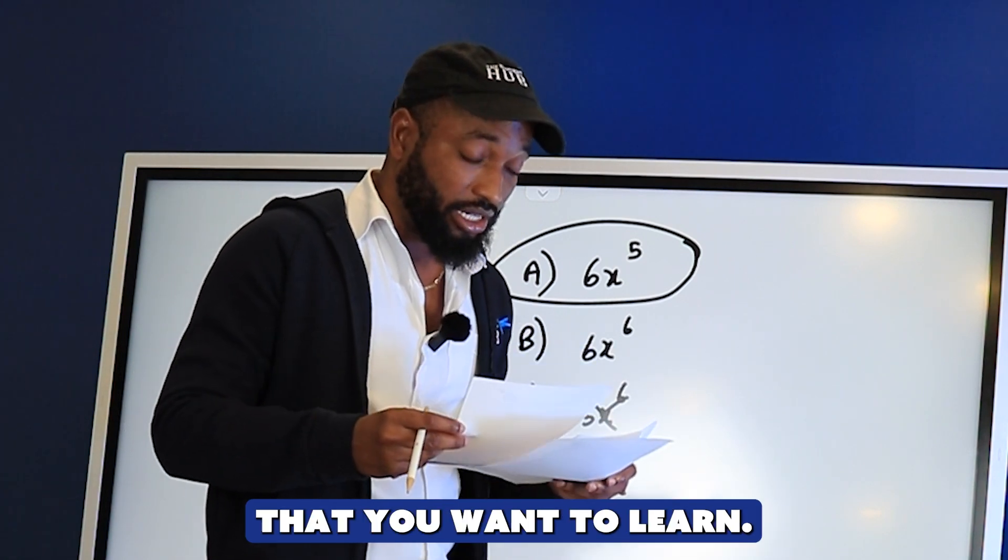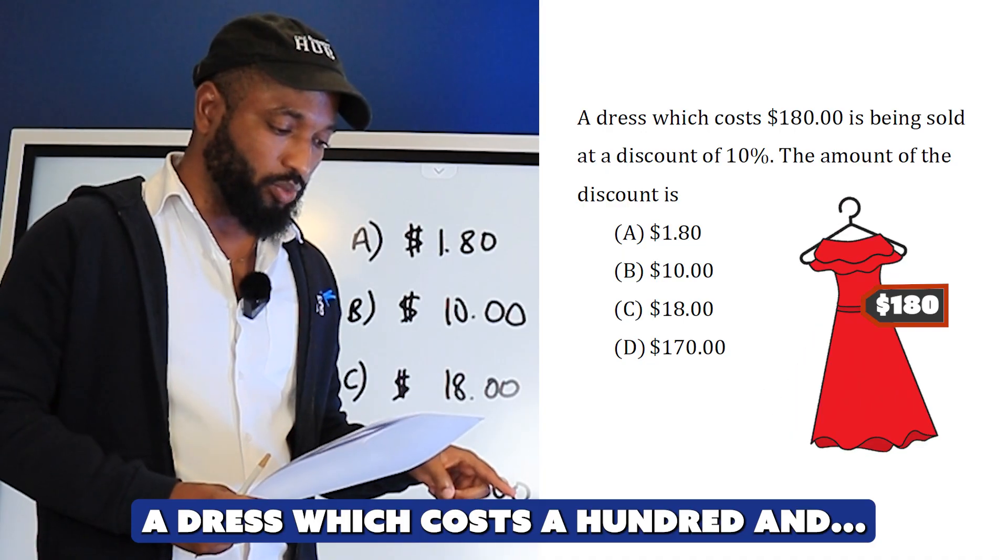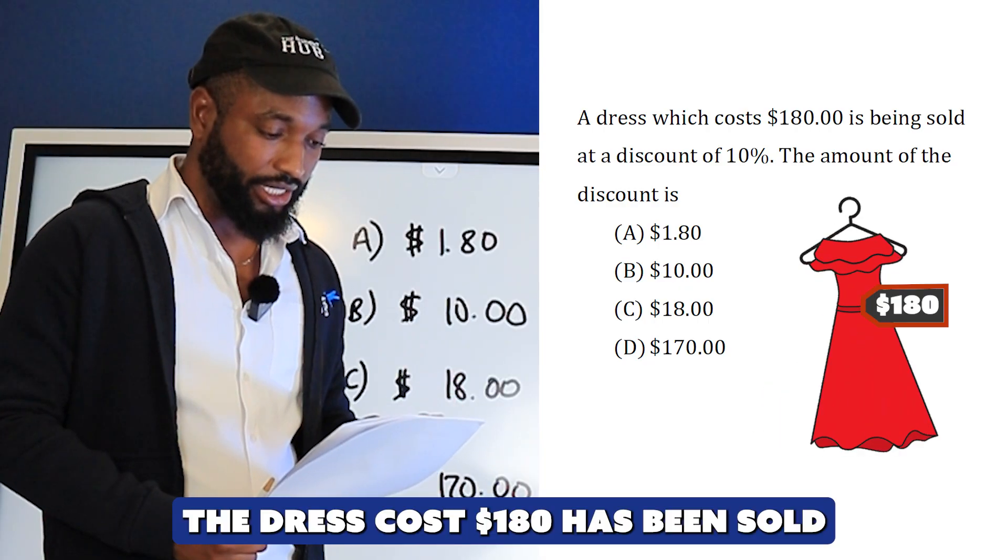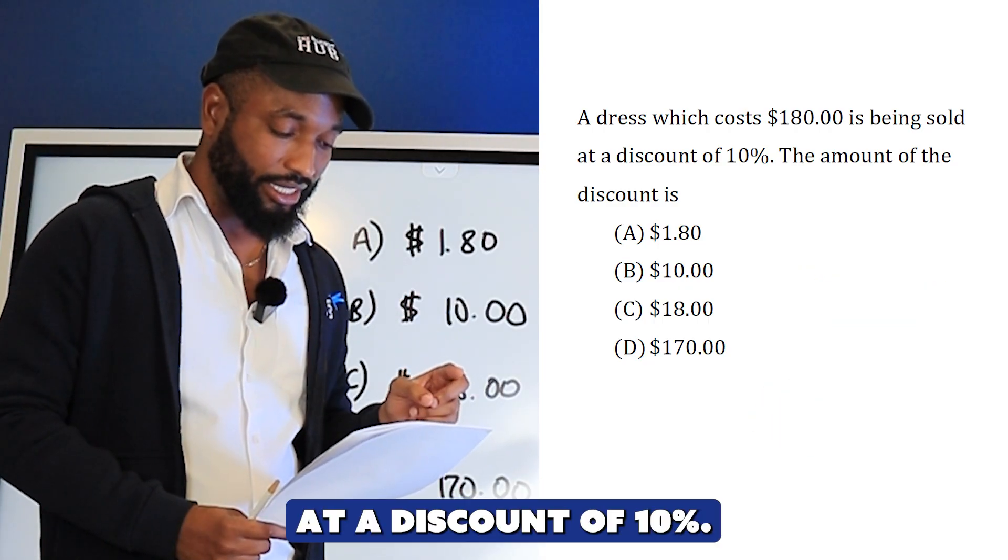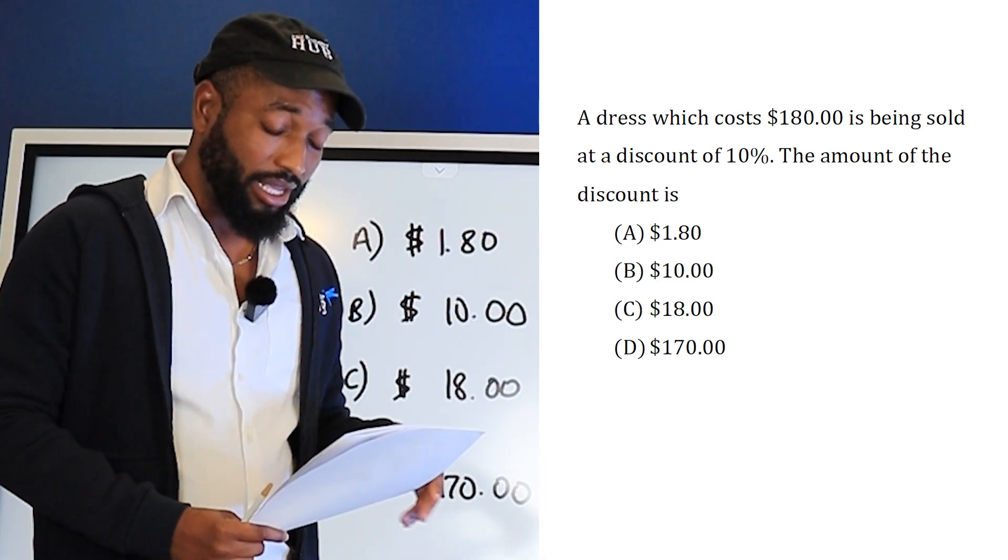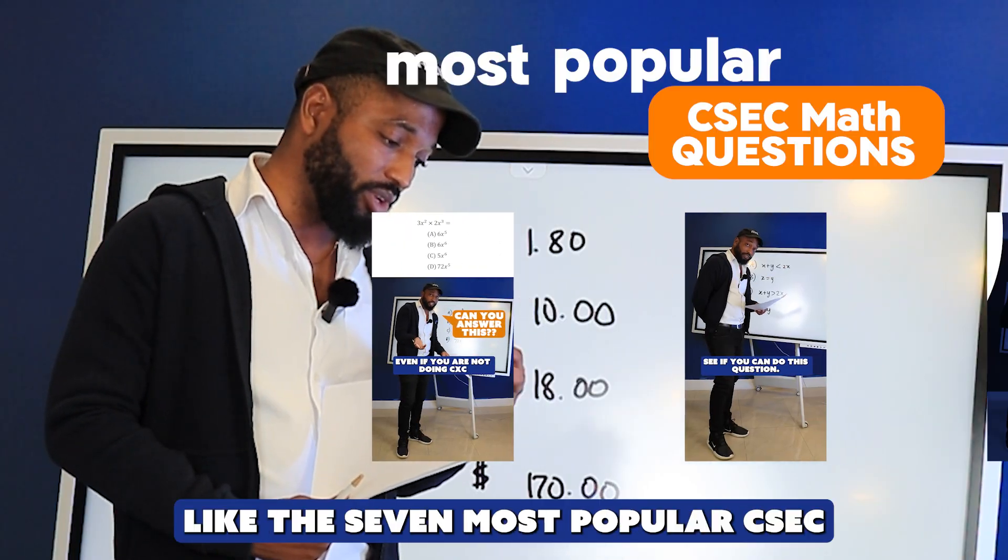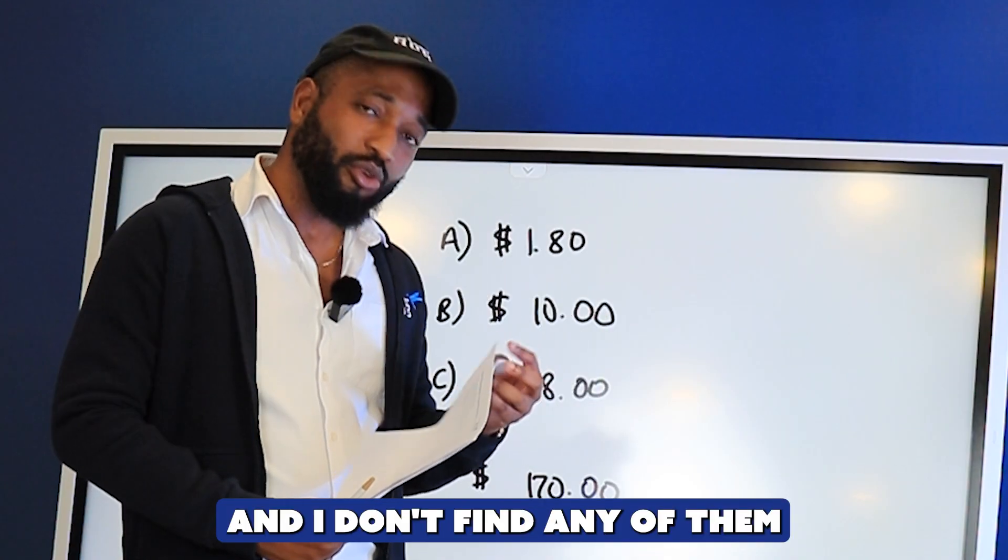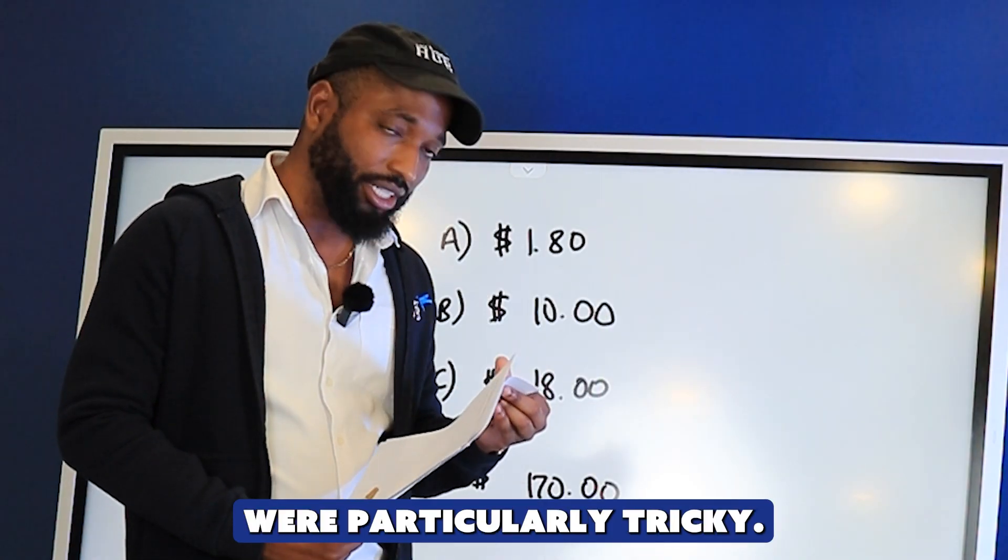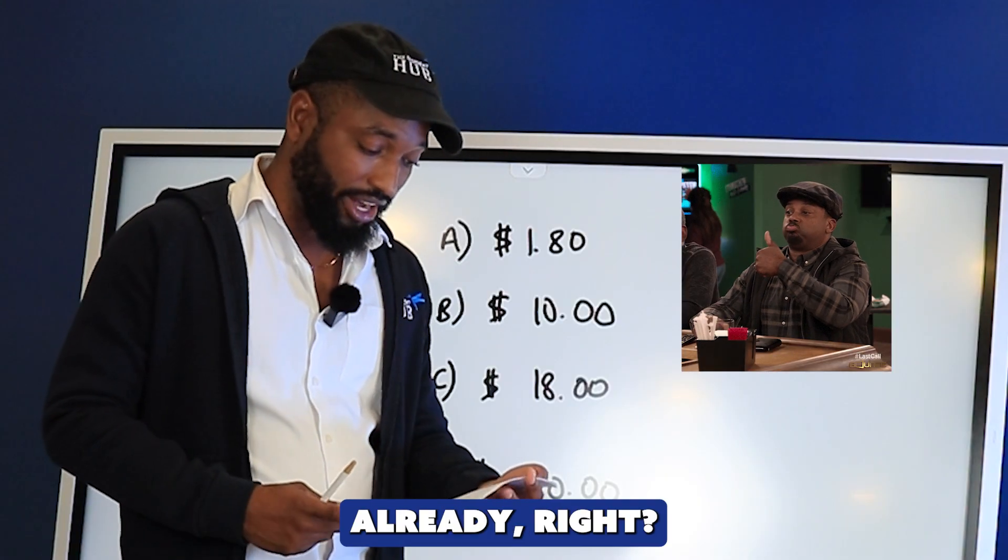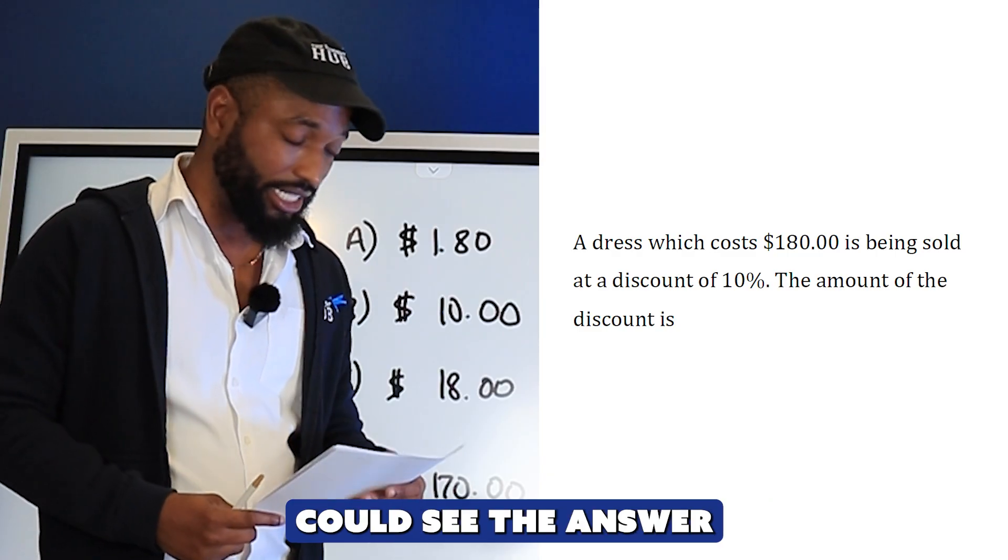A jacket which costs $180 has been sold at a discount of 10%. What's the amount of the discount? We just went through the seven most popular CSEC math questions - they're actually pretty easy, right? Most of you are good at percentages. You can see the answer for this one.